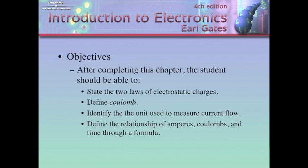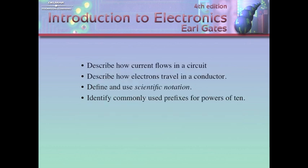After completing this chapter, you're going to be able to state the two laws of electrostatic charges, define the term coulomb, identify the unit used to measure current flow, define the relationship of amperes, coulombs, and time through a formula, describe how current flows in a circuit, describe how electrons travel in a conductor, define and use scientific notation, and identify commonly used prefixes for powers and magnitudes.